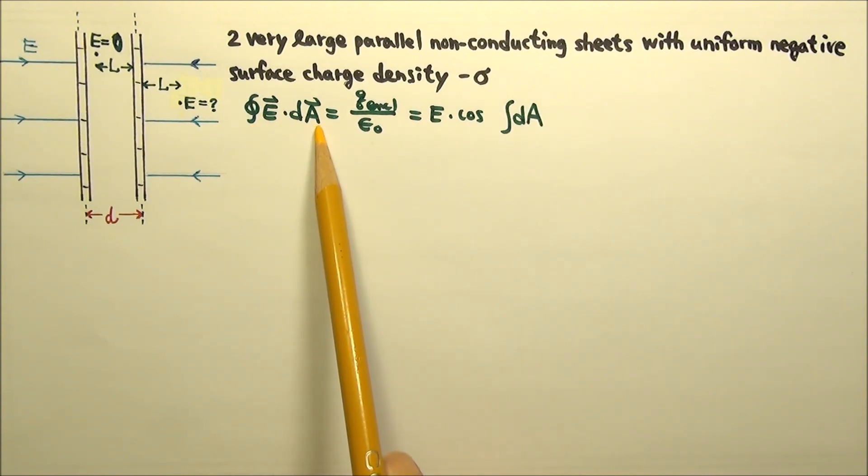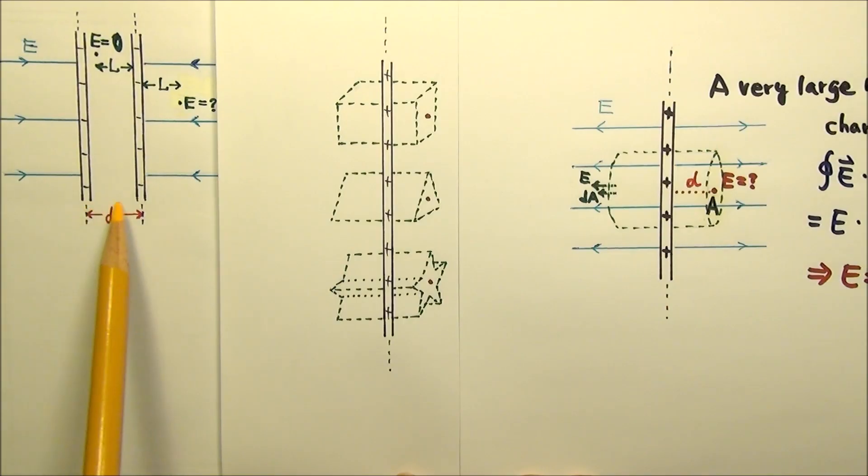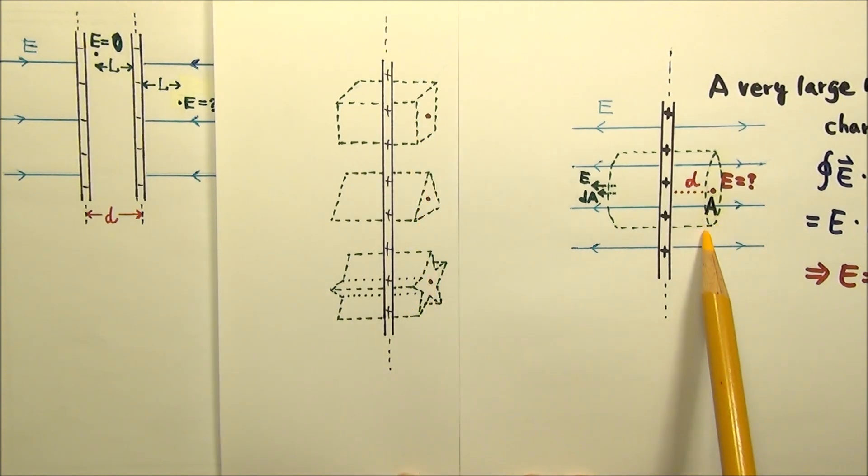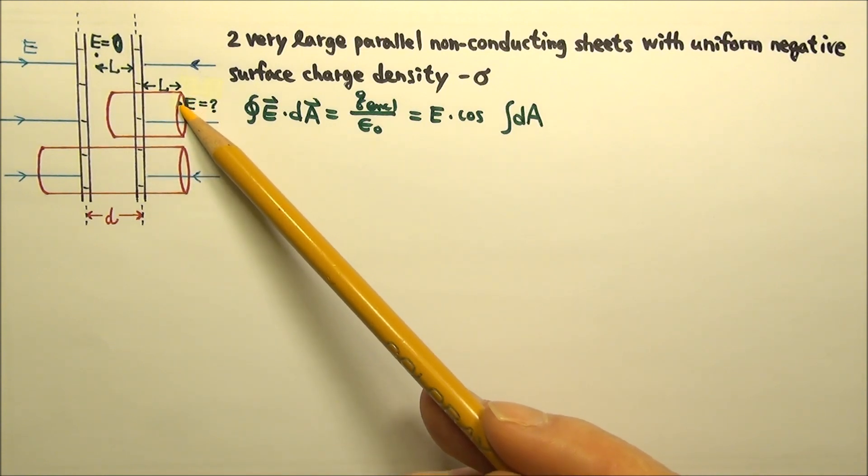What Gaussian surface should we make? There is planar symmetry. So we would make prism shapes like any of these. For convenience, I would make a cylinder that goes through this point.